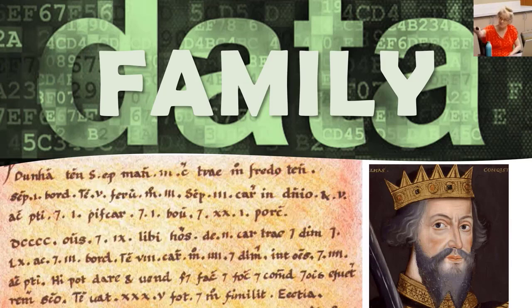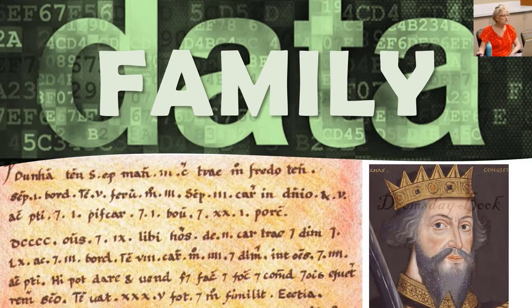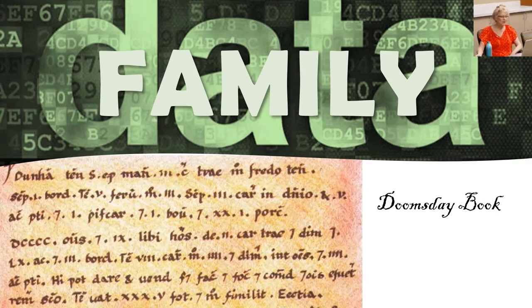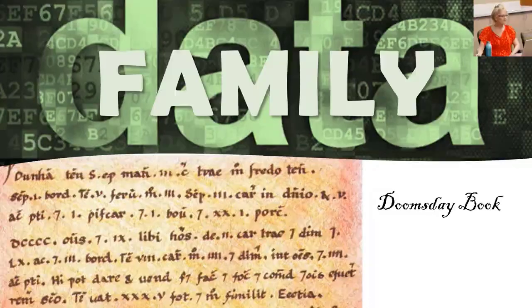In 1066, my ancestor, English King William the Conqueror, conducted the first complete census of everyone living in England, known as the Doomsday Book. That was a database. But raw data is perfectly useless — it only becomes knowledge when we can arrange it to see the questions we want answered. For example, who cares about every household in England? We want to know where did our family live. Then it becomes useful information.